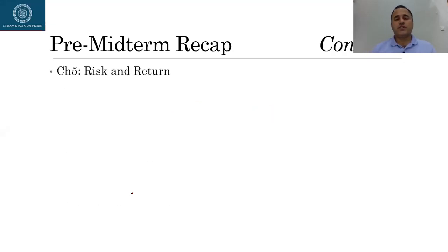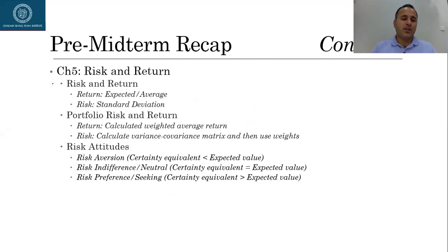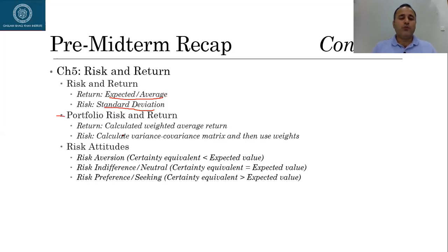In chapter number five we talked about risk and return. There is a popular notion in finance that higher the risk, higher the return — if the risk is high you need a higher return to compensate for it. The question is how do we measure risk. Risk is normally measured through standard deviation, and whenever we talk about return it is actually the expected or average return. We started with a single stock portfolio and then moved to a portfolio, where we calculate the return and adjust for the weights of individual stocks.